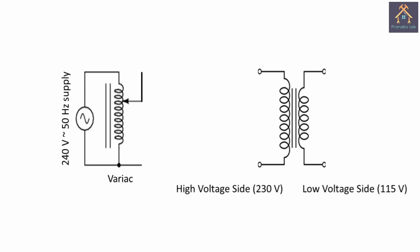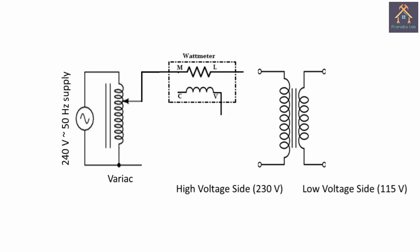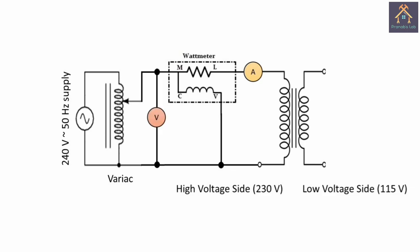A single phase 240 volt supply is connected with a single phase variac. From the variac, it is connected with the M terminal of the wattmeter. The M and C terminals of the wattmeter are shorted. The L terminal of the wattmeter is connected with an ammeter. From the ammeter, it is connected with the high voltage side, and from the high voltage side it is connected back to the variac. The V terminal of the wattmeter is connected with the common terminal of the variac. A voltmeter is connected across the high voltage side of the transformer.